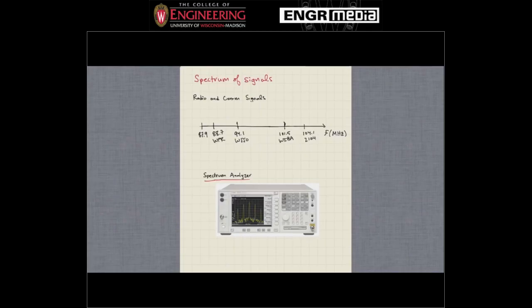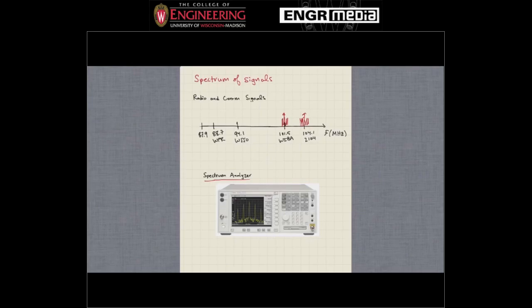Last time we looked at spectrum representations of signals, and this is something you're likely familiar with. For example, in FM radio, in older FM radios you'd actually see the spectrum and turn a dial to tune to different frequencies. If you were to look at the spectrum, you'd see peaks at each radio station — for example, a sinusoid at 101.5 megahertz, which is WIBA-FM in Madison, with the audio information as other sinusoids collected right around that frequency.